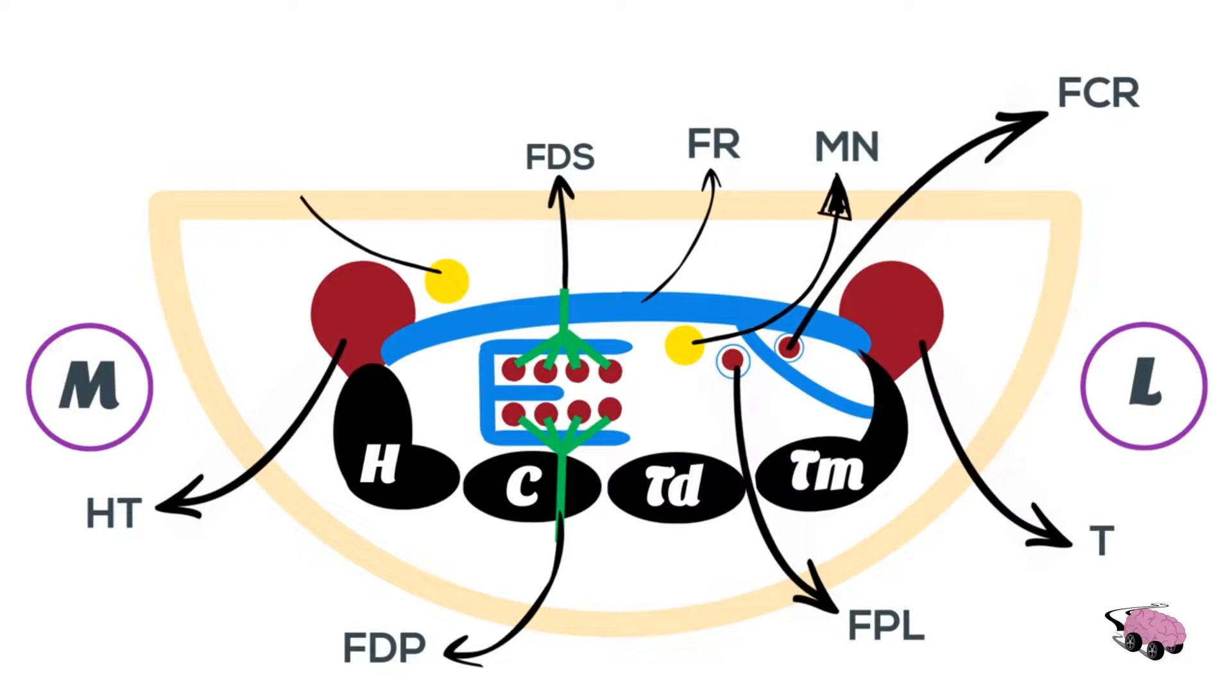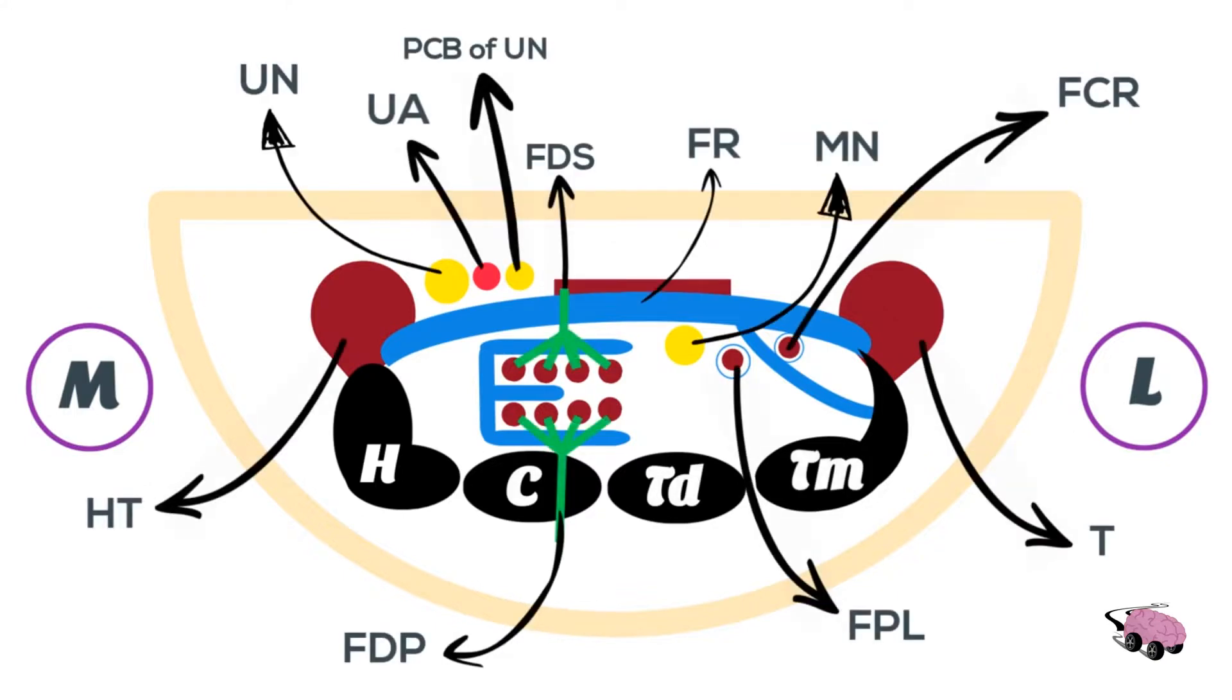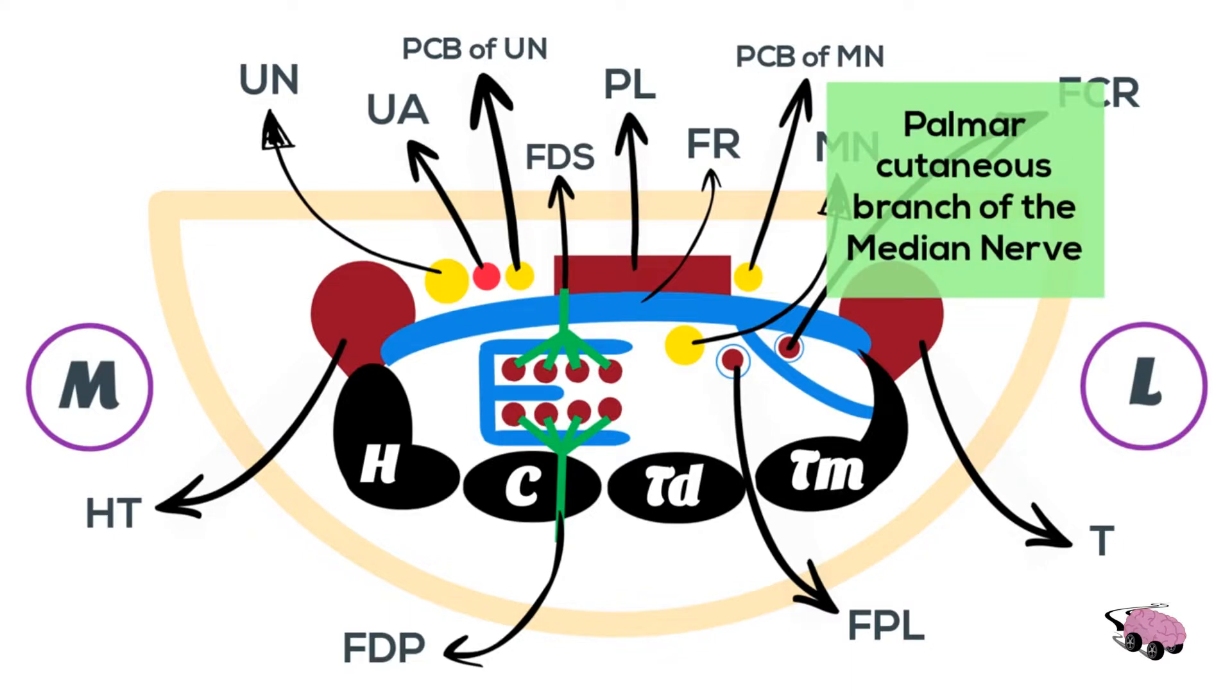Next, we have the ulnar nerve. Just lateral to it, we have the ulnar artery. And next to this, we can add the palmar cutaneous branch of the ulnar nerve. In the middle, we'll draw a structure of a muscle. This is the palmaris longus muscle. And the last one is a small nerve from the median nerve, called the palmar cutaneous branch of the median nerve.